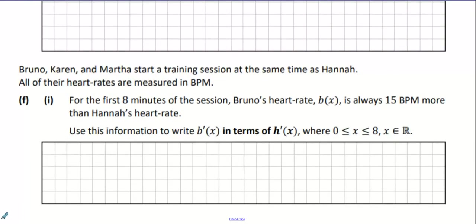And there's an F for our troubles. Bruno, Karen, and Marta start a training session at the same time as Hannah. All of their heart rates are measured in BPM. For the first eight minutes of the session, Bruno's heart rate B of X is always 15 beats per minute more than Hannah's heart rate. Use this to write down B of X in terms of H of X.